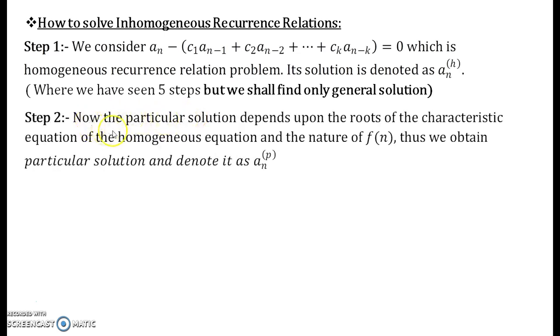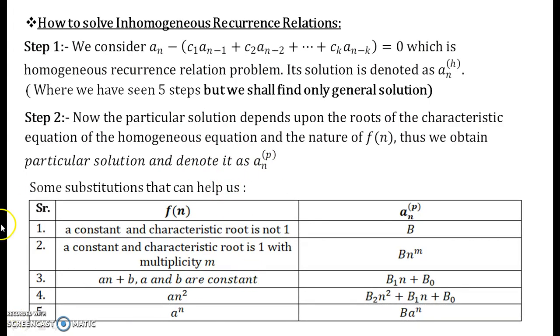Now we will go to step 2. What does it say? The particular solution depends upon the roots of the characteristic equation of the homogeneous equation and the nature of fn. Thus we obtain the particular solution and we denote it by this notation an bracketed p in the power. So let us see: I am giving you a table over here which will help you to find the particular solution. Generally, this is the type of the functions that we encounter while solving an inhomogeneous recurrence relation. So these are the substitutions that are available.